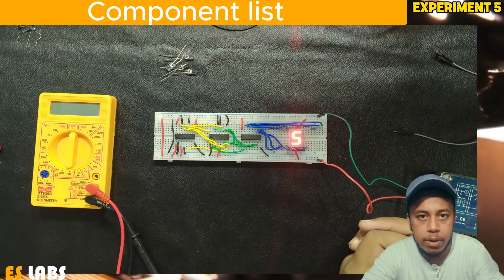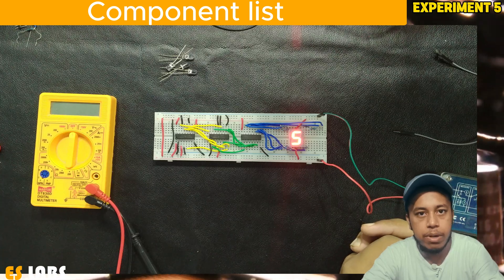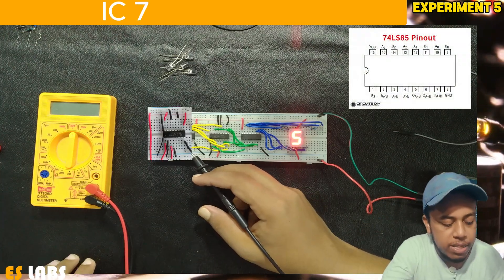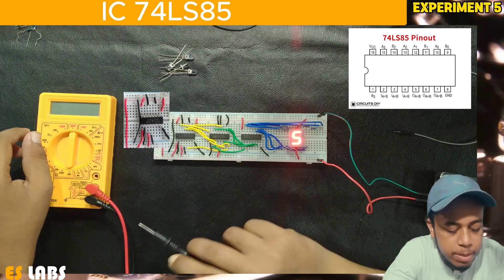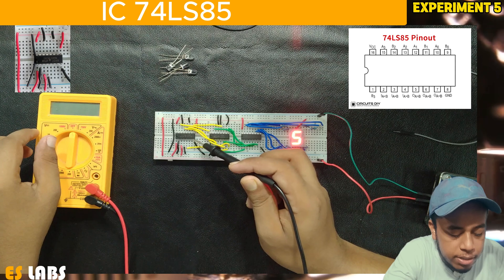In this experiment we test each component separately. Let's start with 74LS85. This is our IC 74LS85. It has 16 pins. Pin 16 is VCC and pin 8 is our ground.